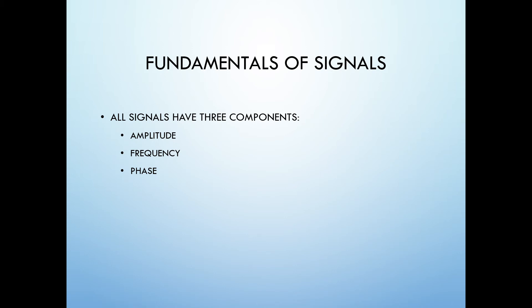Now that we have learned the basic characteristics of digital and analog signals, let's dig deeper into the signal and its fundamental components. Analog signals have three basic components: amplitude, frequency, and phase.